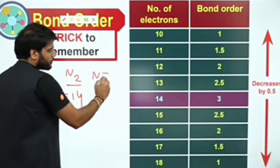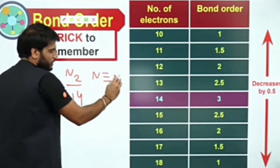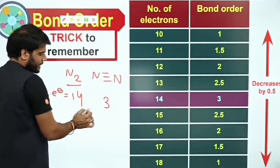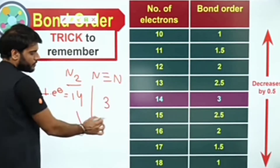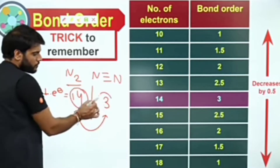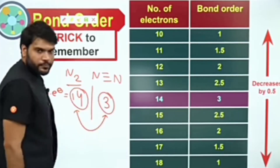You also know that in nitrogen there is a triple bond. How much of bond order is coming out? 3. Now remember: if you have a total number of 14 electrons, the bond order will be 3.